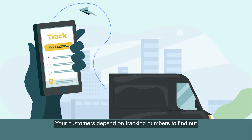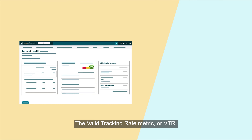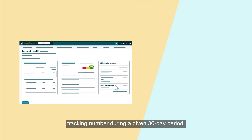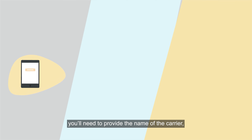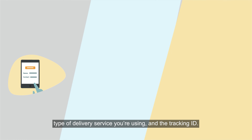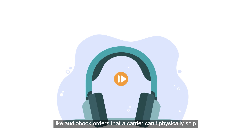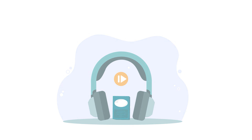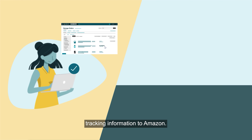Your customers depend on tracking numbers to find out where their orders are and when they can expect to receive them. The valid tracking rate metric, or VTR, represents the total percentage of packages with a valid tracking number during a given 30-day period. When you confirm a shipment, you'll need to provide the name of the carrier, type of delivery service you're using, and the tracking ID. Certain orders are excluded from this metric, like audiobook orders that a carrier can't physically ship. For included orders, we recommend choosing a carrier that reports tracking information to Amazon.